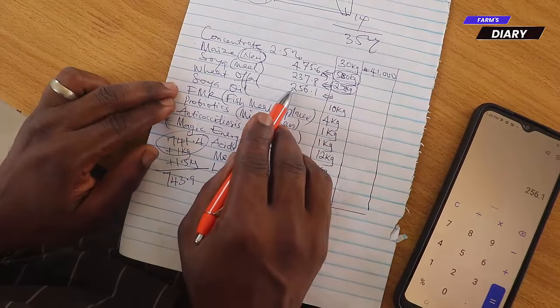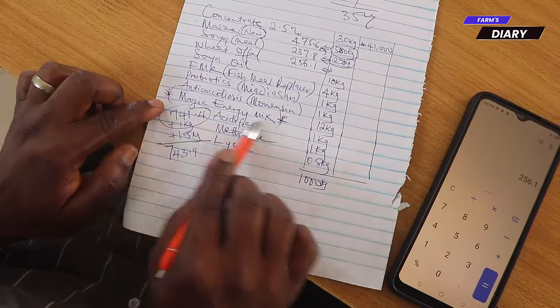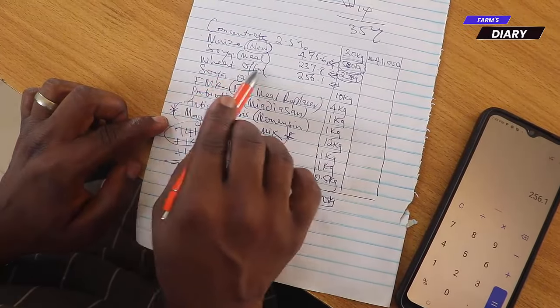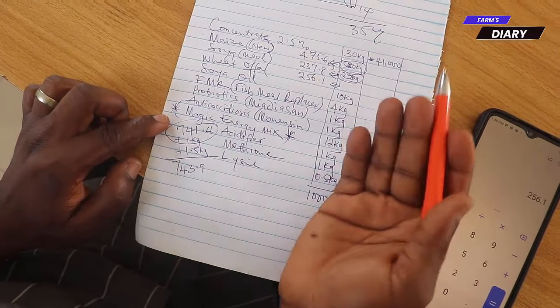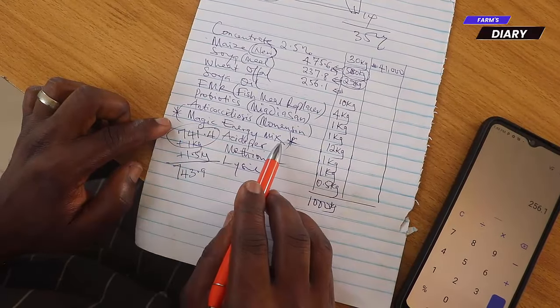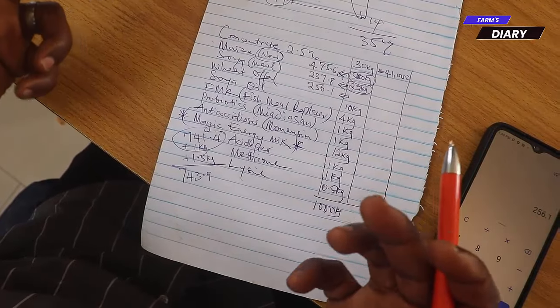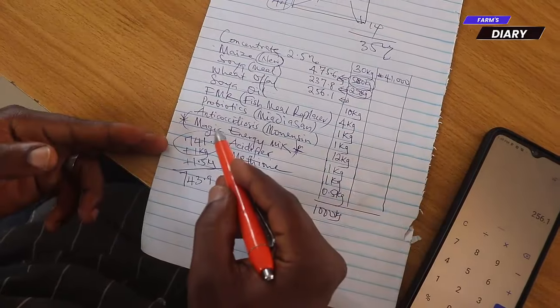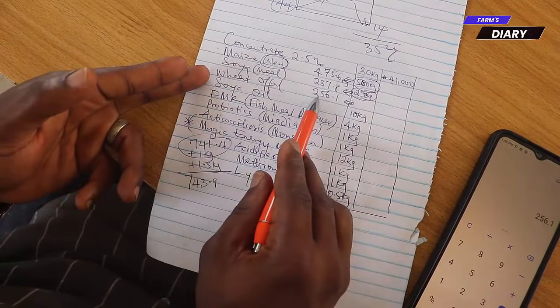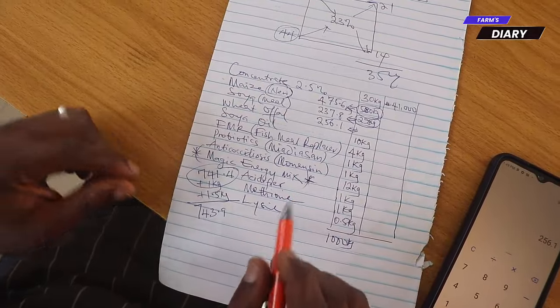And now, why is it going to be 256.1? Well, remember, we're using magic energy mix. And this magic energy mix, it digests the wheat offal and converts the wheat offal to more energy. To more energy. And the content of this energy magic mix has a lot of energy in it and also have a lot of amino acids to compensate the soya. So, that is why you are seeing that wheat offal is higher in this feed than what it should be in the standard feed meal.